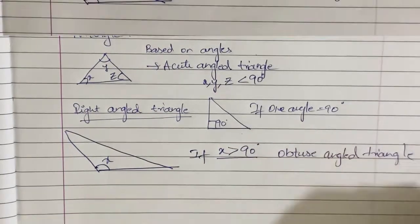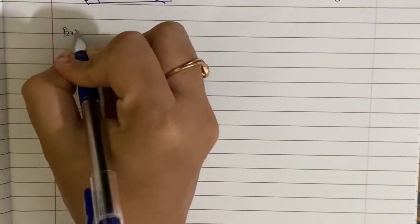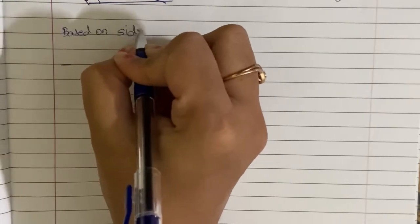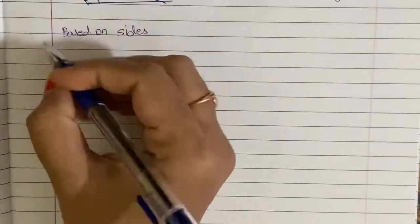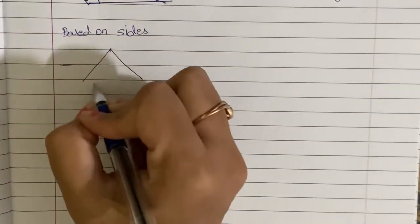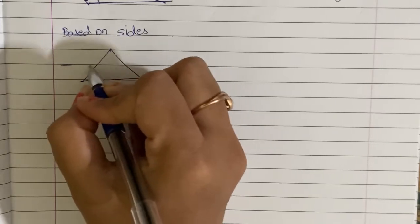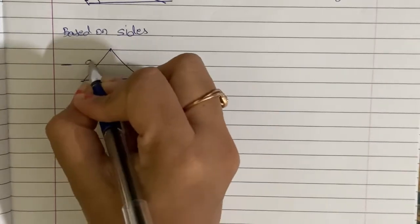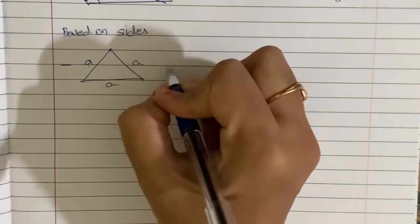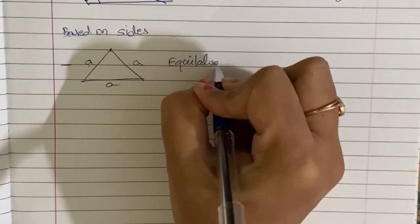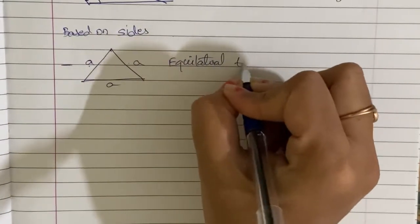Equilateral triangle. Now, based on sides, different types of triangles. This is a triangle where all three sides are equal: A, A, A. This is called an equilateral triangle.